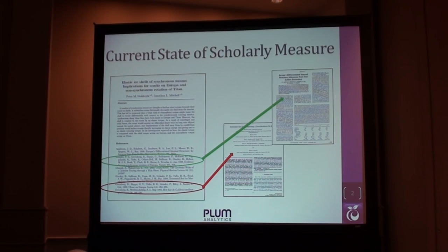The current state of scholarly measurement — we're all familiar with this. It started in the 60s, paper-based. I want to publish my paper in a high-impact journal, and I hope future people after me cite my work in hopefully a high-impact journal. And that still is the state today — very, very paper-based, but we're all familiar with that.